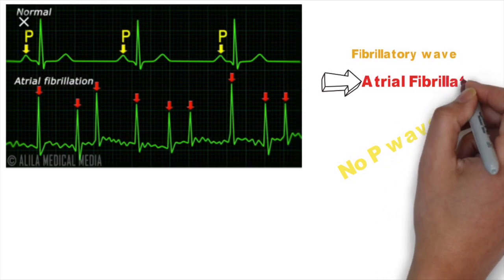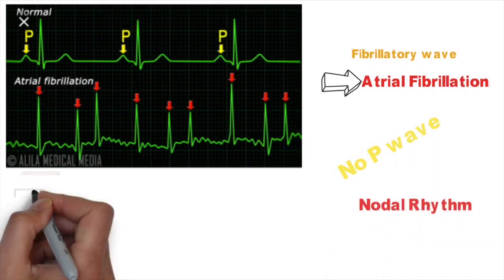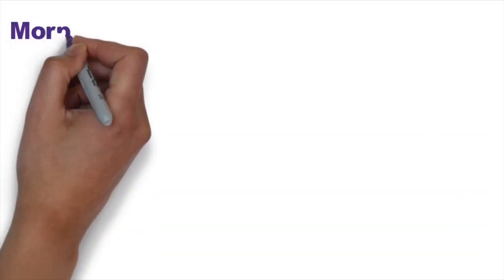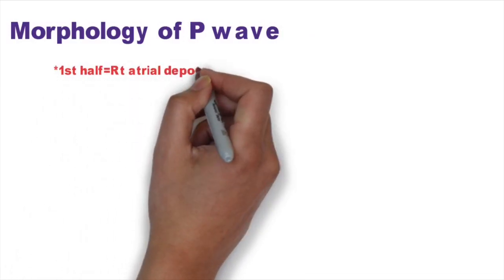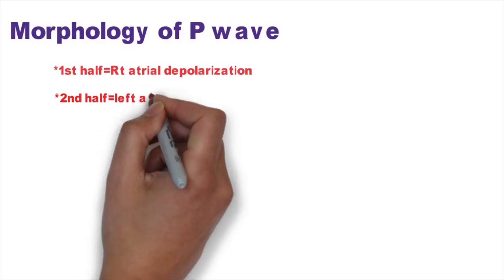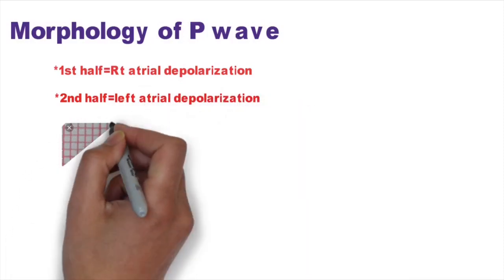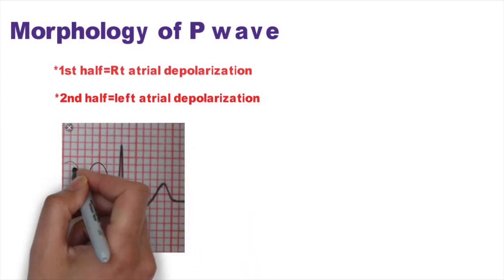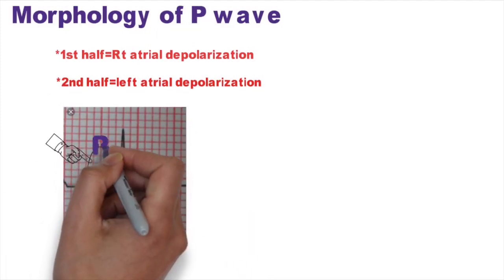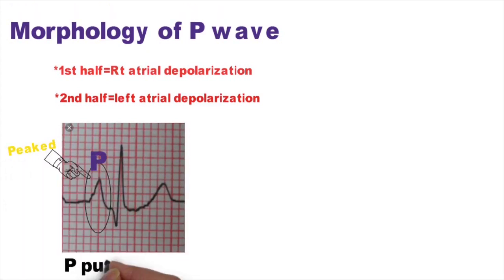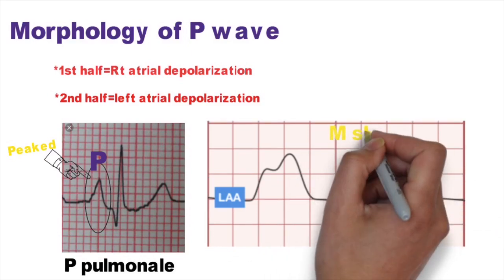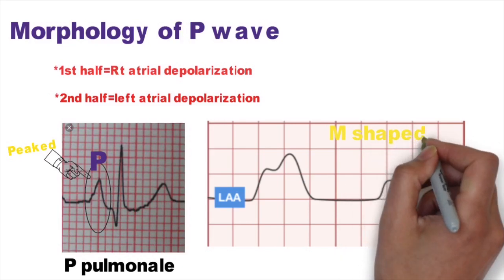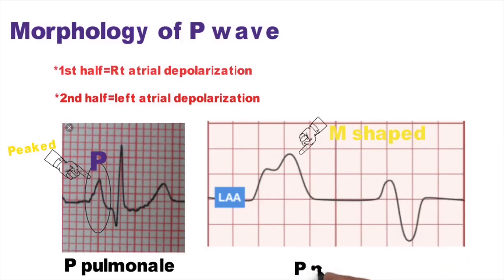The P wave can also be absent in nodal rhythm or idioventricular rhythm. Regarding P wave morphology: the first half represents right atrial depolarization and the second half represents left atrial depolarization. In right atrial enlargement, a peaked P wave is expected, especially in cor pulmonale. In left atrial enlargement, the initial half is normal but the second half is enlarged — this is called the 'M-shaped' or bifid P wave, seen in mitral stenosis.